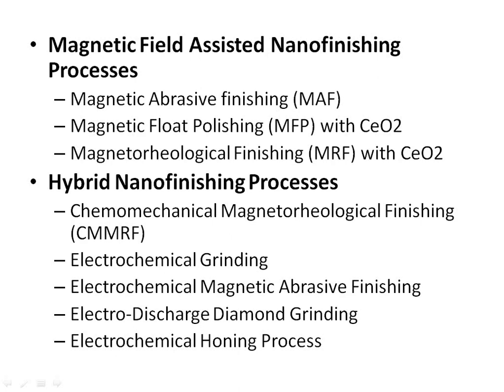Magnetic field assisted nanofinishing processes include: magnetic abrasive finishing (MAF), magnetic float polishing (MFP), and magnetorheological finishing (MRF). Hybrid nanofinishing processes include: chemomechanical magnetorheological finishing (CMMRF), electrochemical grinding, electrochemical magnetic abrasive finishing, electrodischarge diamond grinding, and electrochemical honing process.